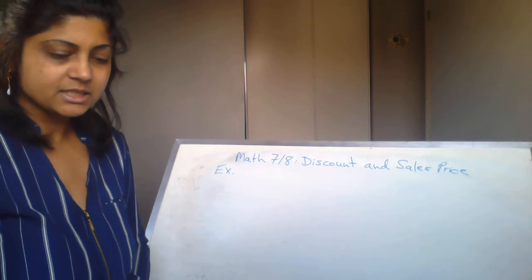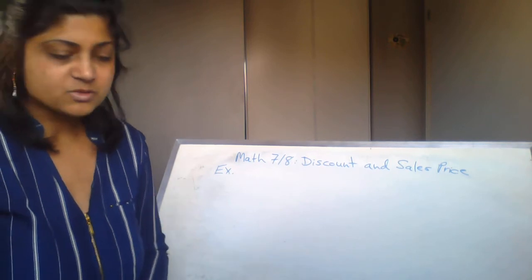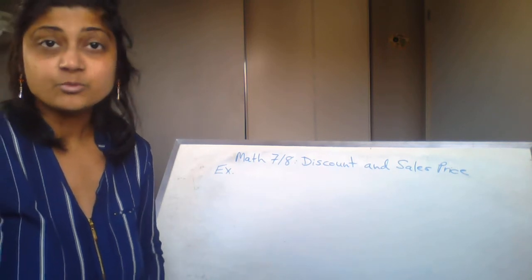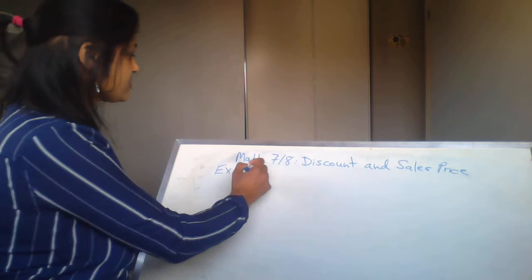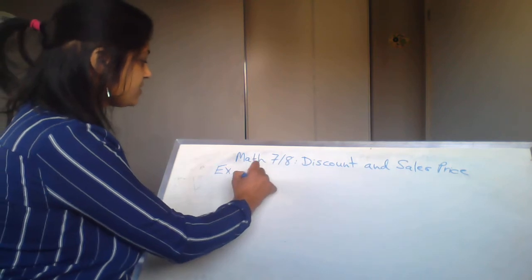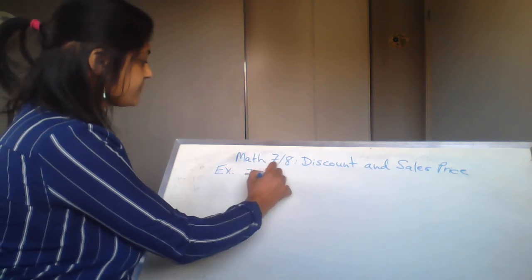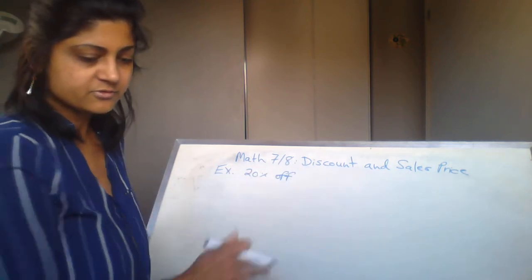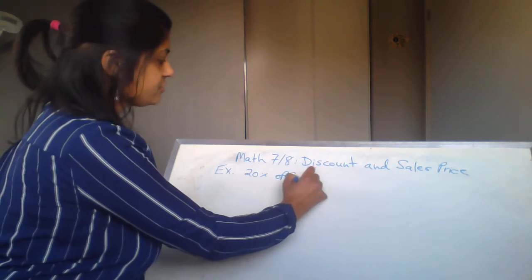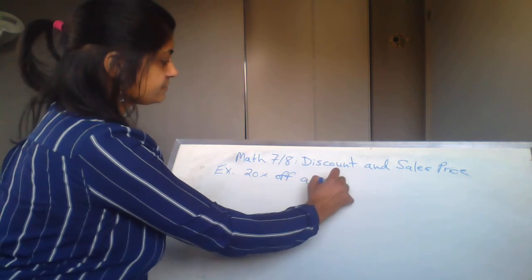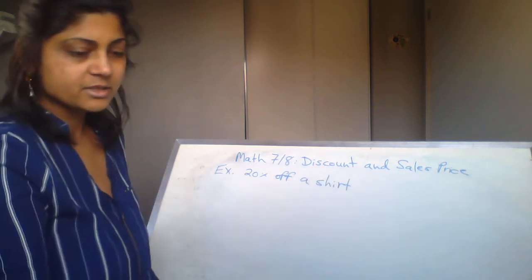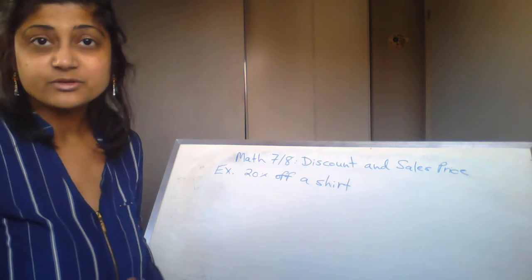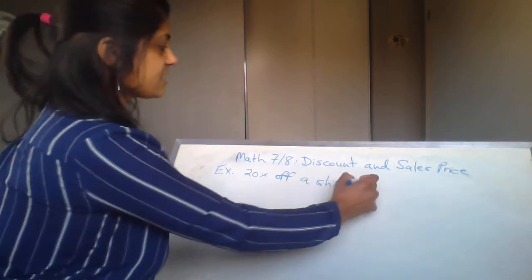First, we're going to calculate each discount price. This is actually something that's really important. So let's put 20% off a shirt, and the price of the shirt is $39.95.